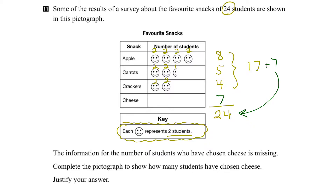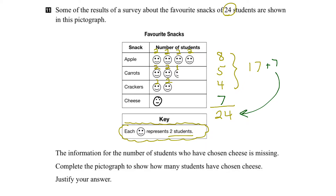The next step is how do we represent that visually? We have to represent seven students liking cheese. We start with a smiley face for two students, another smiley face for another two students, and another smiley face for another two students — that's a total of six. We need one more student, and as we saw with carrots, we can represent that with half a smiley face. So we put in half a smiley face, and that represents one student — giving us 2, 4, 6, 7 students who like cheese.